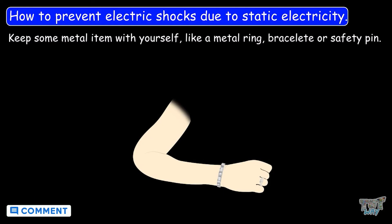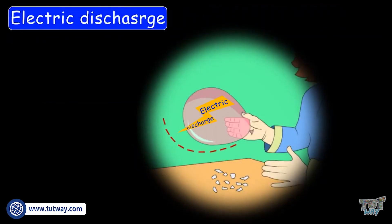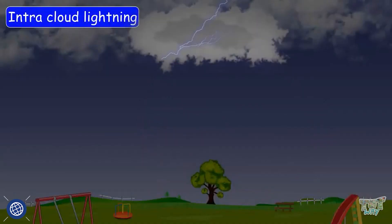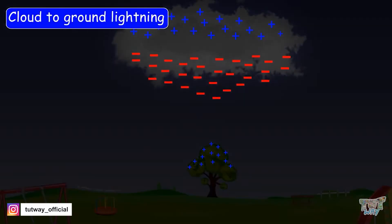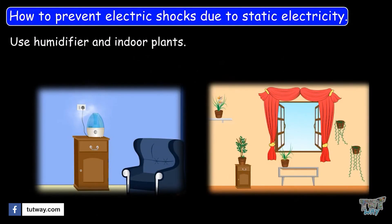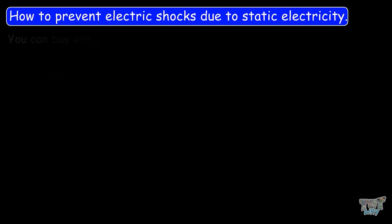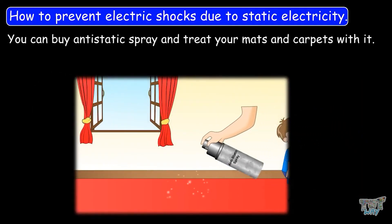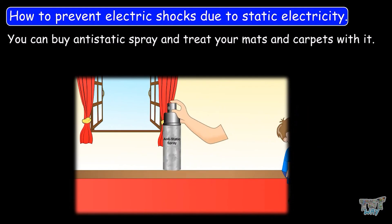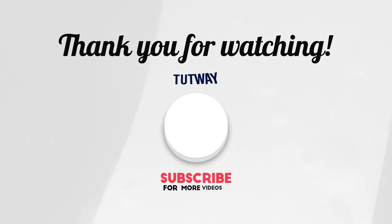So friends, today we learned what electrical discharge is and how this electrical discharge is responsible for the lightning that we see in the sky. We also learned how we can prevent ourselves from getting small electric shocks due to static electricity. You can guide your parents with these small steps to avoid static electricity development in your house. Thank you so much for watching!